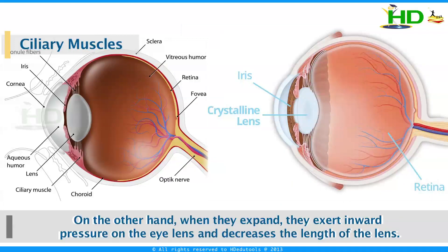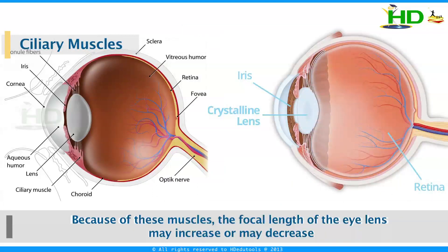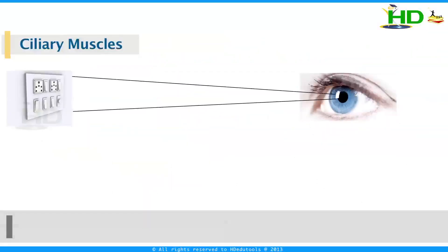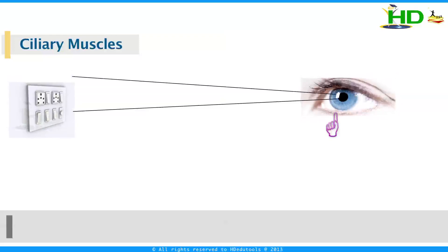That means because of these muscles, the focal length of the eye lens may increase or decrease. You can observe this with a simple experiment — just see an object with one eye. Now press your eye. You can observe that the object will appear at a different position. That means by applying some pressure on these muscles, the focal length of the eye lens is changing.